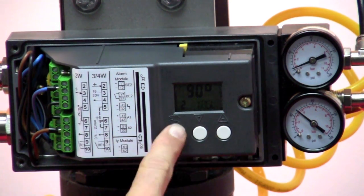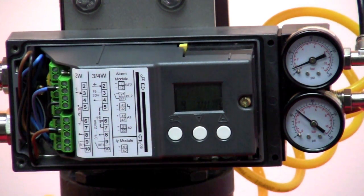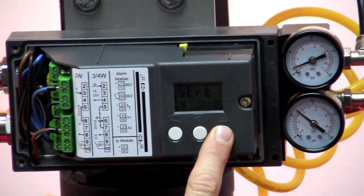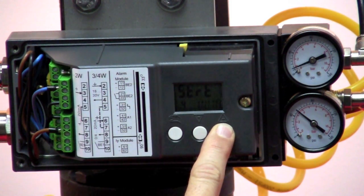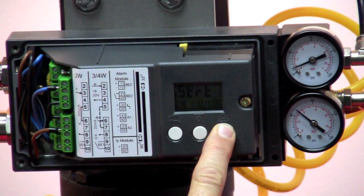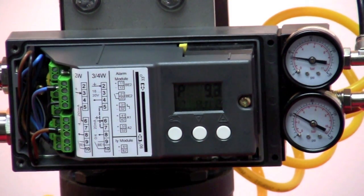And now comes the easy part. Go to menu item 4, which is the automatic initialization screen. Press and hold the plus key for 5 seconds. And then the positioner takes over and does the rest.